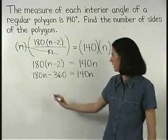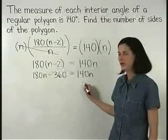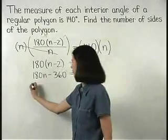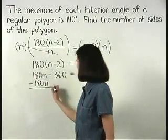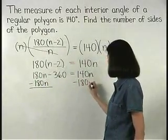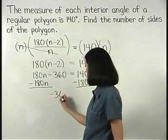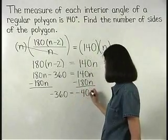Next, we put our n terms together on the right side of the equation by subtracting 180 n from both sides. And we have negative 360 equals negative 40 n.